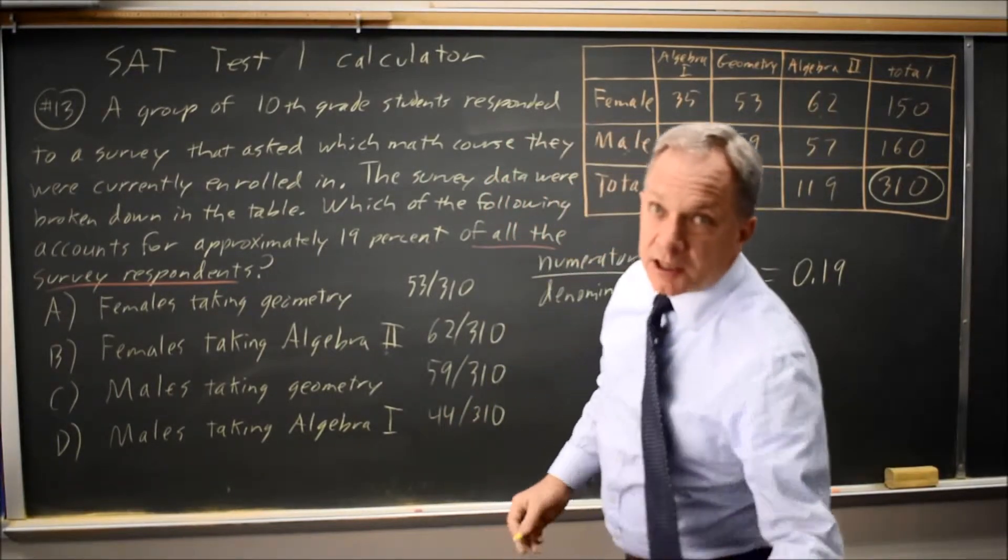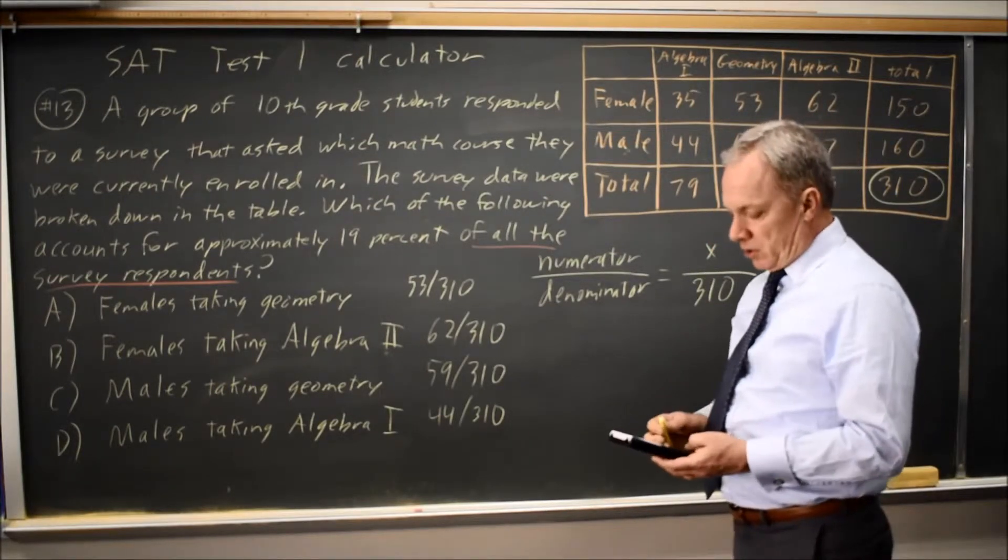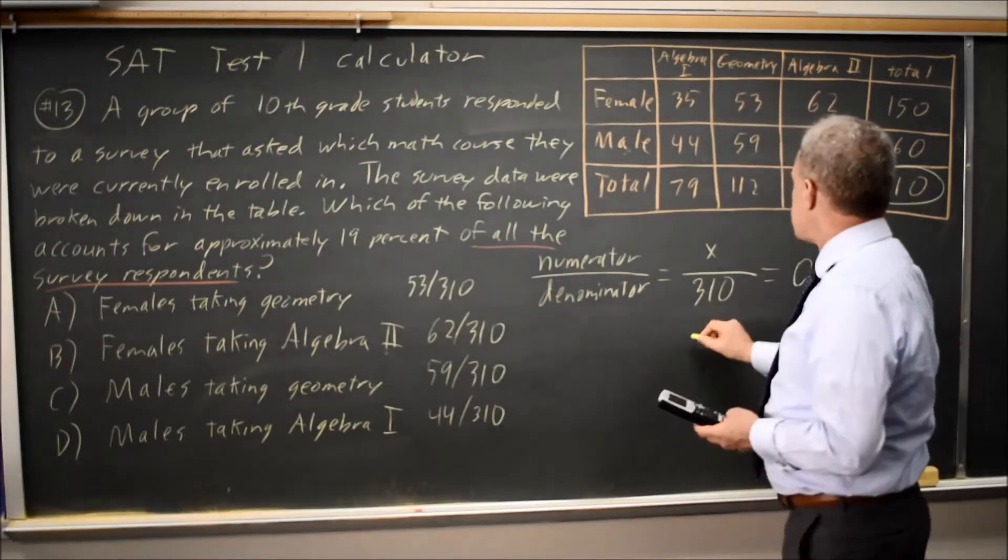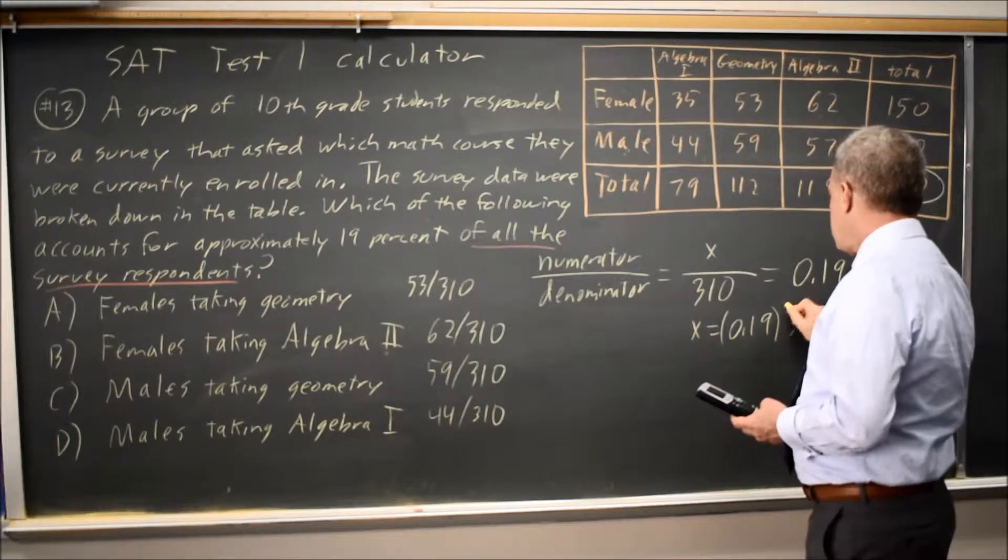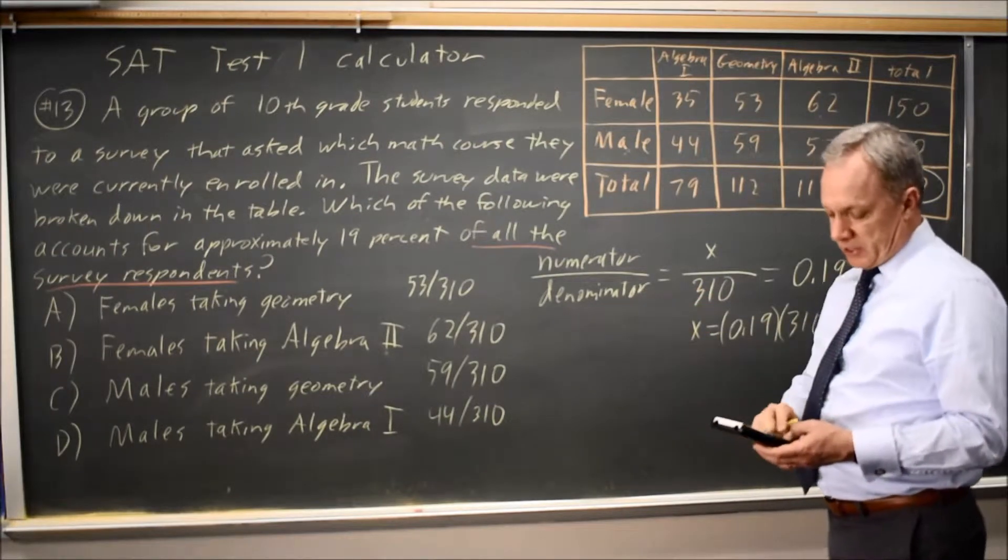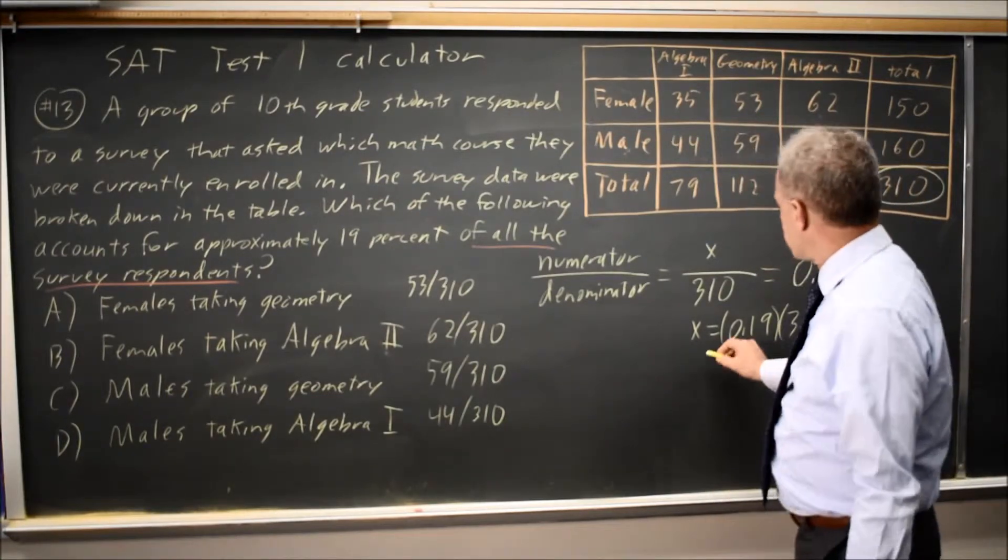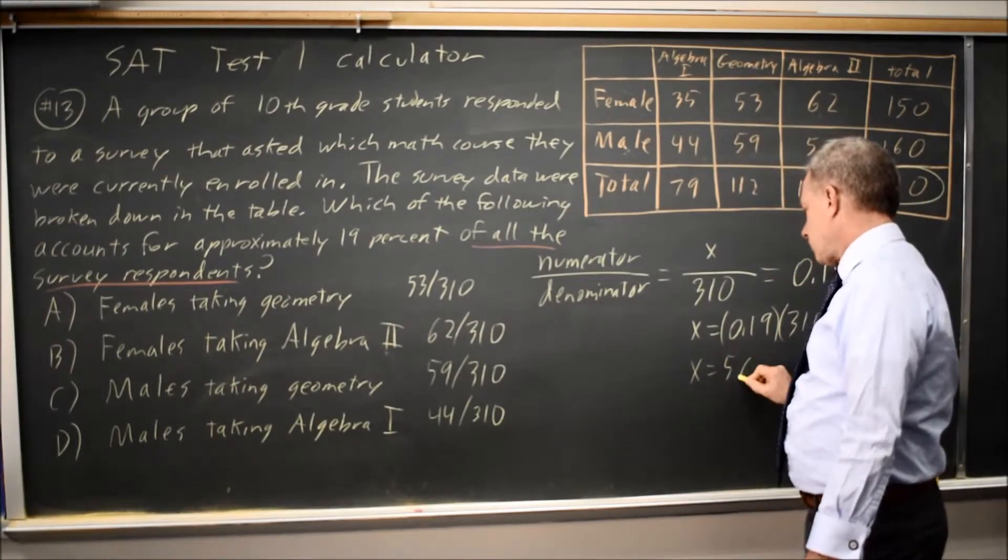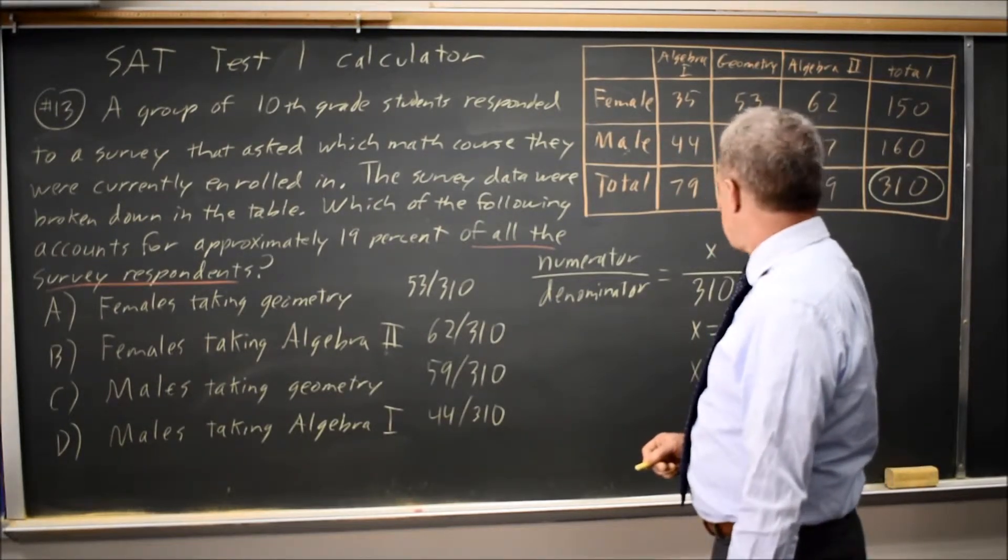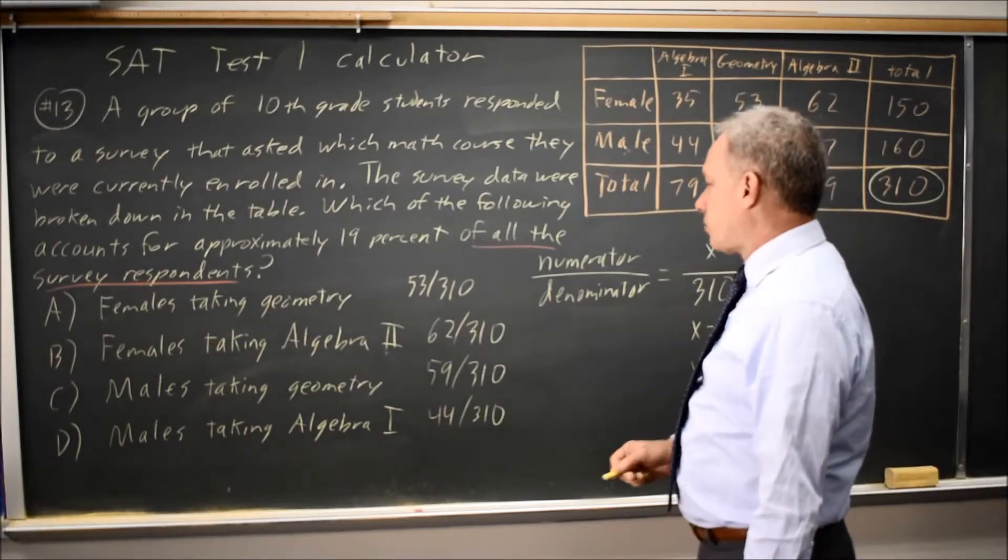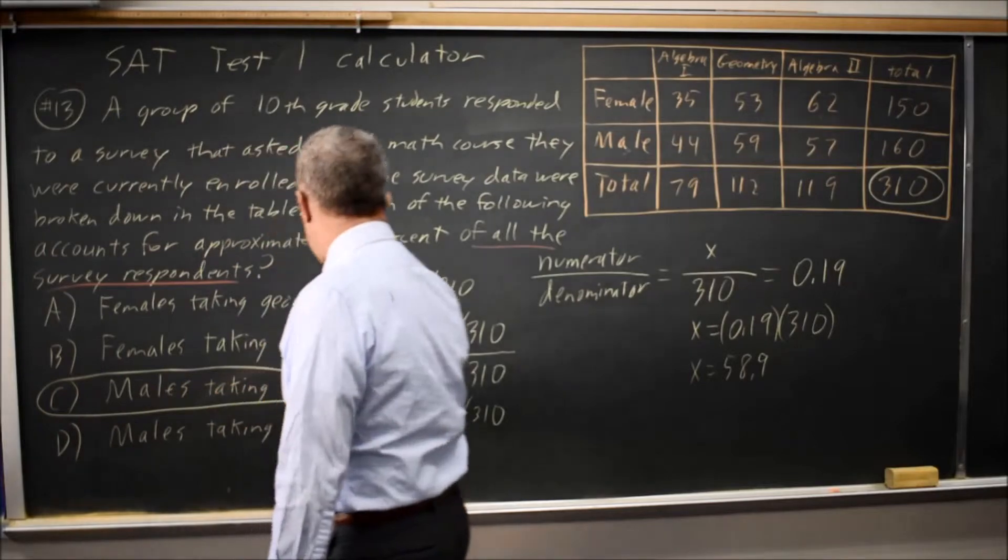And I can check on the calculator for the decimal values and choose the one closest to 0.19. Alternatively, I can say x equals 0.19 times 310 if I multiply both sides by 310. And that gives me 58.9. And their question is, which is approximately 19%? And that would be the one that's approximately 58.9, which is 59 out of 310.